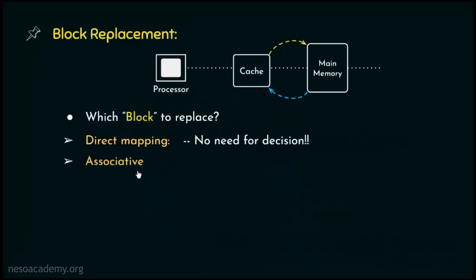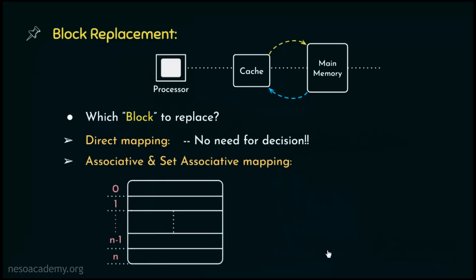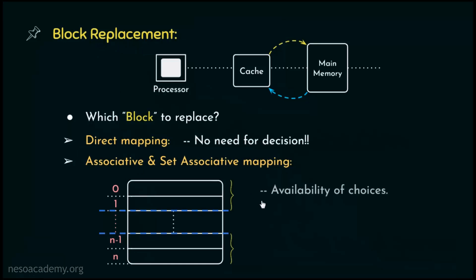On the contrary, in case of associative and set associative mapping, a particular main memory block can be placed anywhere inside the cache if it is fully associative. And if it is set associative, the main memory block can be placed anywhere inside a particular set. Therefore, for block placement we have availability of choices, and for block replacement we will be needing cache replacement policies, since unlike direct mapping, the cache line is not specified for a particular main memory block.